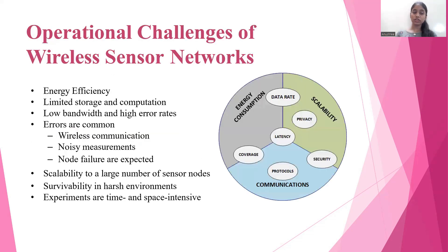Operational challenges of wireless sensor networks include energy efficiency, limited storage and computation, low bandwidth and high error rates. Errors are common during wireless communication, along with noisy measurements and unexpected node failures. Additional challenges include scalability to a large number of sensors, poor survivability in harsh environments, and experiments being time and space intensive.